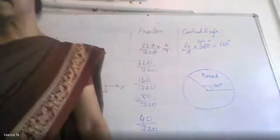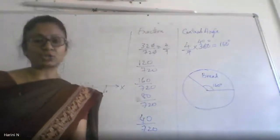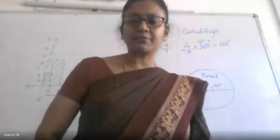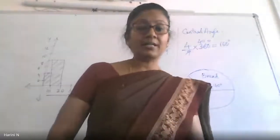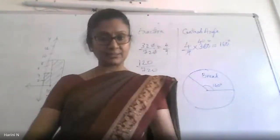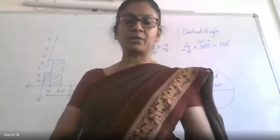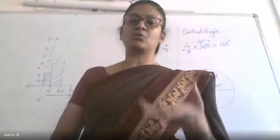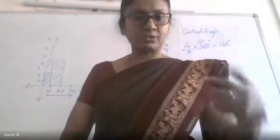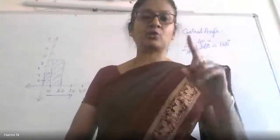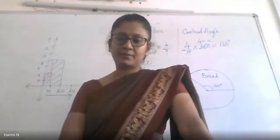Faces, edges, and vertices offer lots of scope for questions. Any solid given, you should be able to identify what kind of solid it is. We have studied polyhedrons of different varieties — prisms, pyramids, convex polygons, and concave polygons. Go through all the information in your textbook; it will be helpful for the 1-mark questions from this chapter.